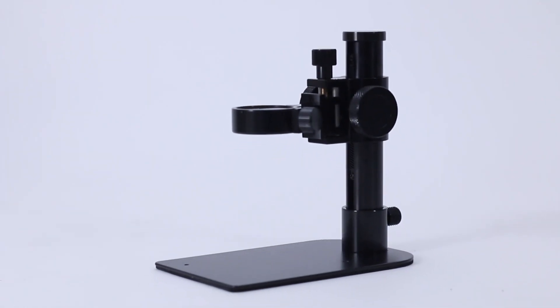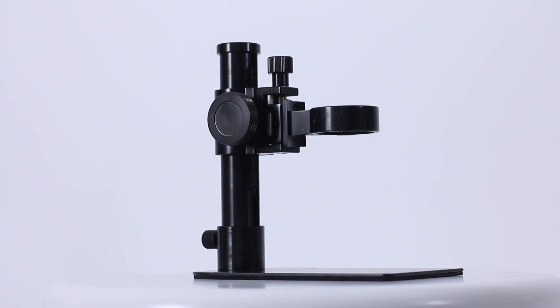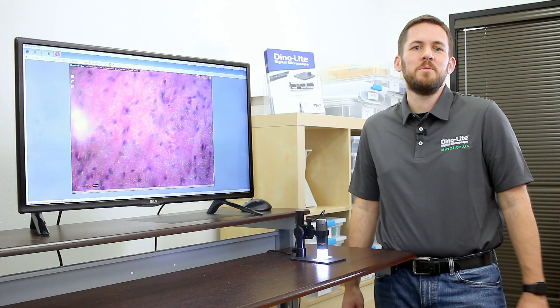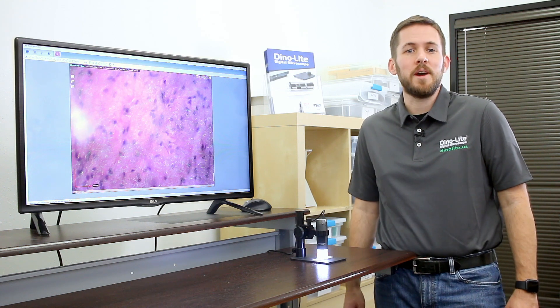The MS34B R3 is another great option with dual focus adjustment knobs, a very small footprint, and it comes at a lower price point than the other Hi-Mag stands.